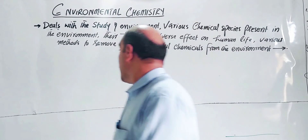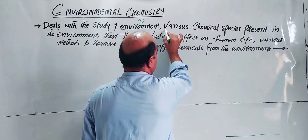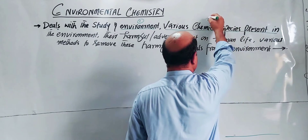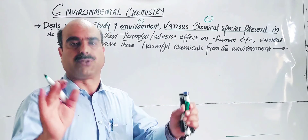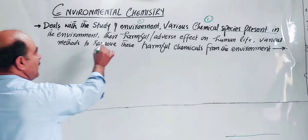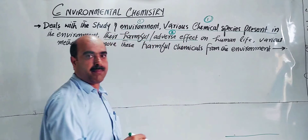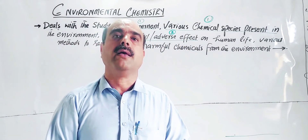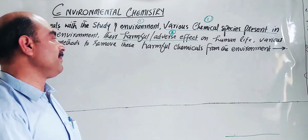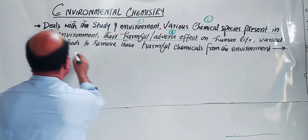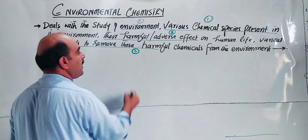Environmental chemistry involves: first, the study of various chemical species present in the environment — both chemical and biological species. It studies whether these species are harmful and their harmful effects. It covers harmful effects on human life, plant life, building materials, and aquatic life — the bad effects and diseases caused by these harmful materials. Then it also covers various methods to remove these harmful materials.